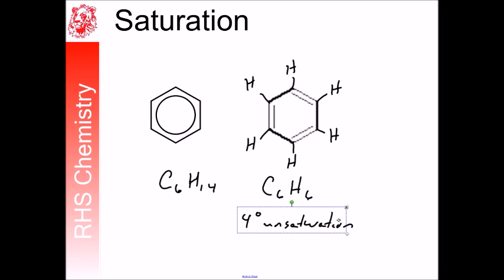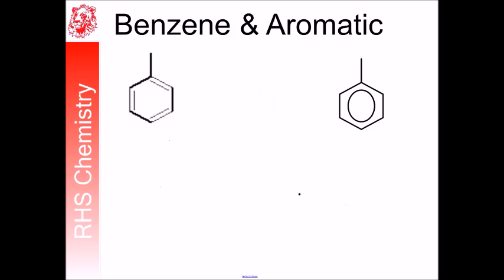In every benzene ring we get one degree of unsaturation from that double bond, one degree of unsaturation from that double bond, a third degree of unsaturation from that double bond, and then a fourth one from the ring.